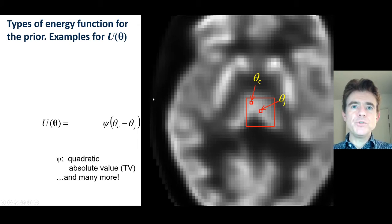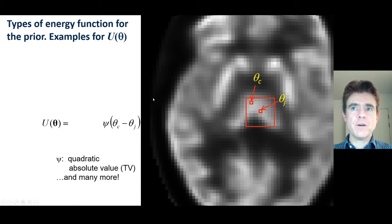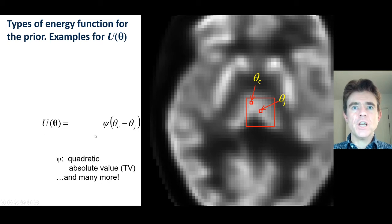We do not want positive and negative differences to have a different effect in the definition of our energy, and so we define a potential function of those differences.